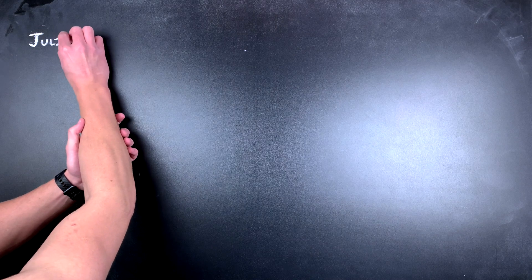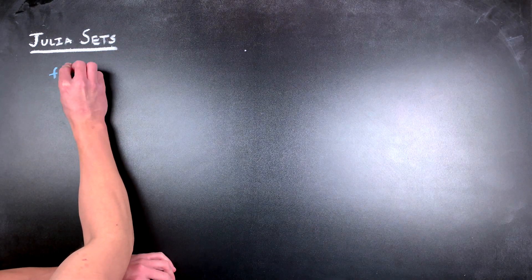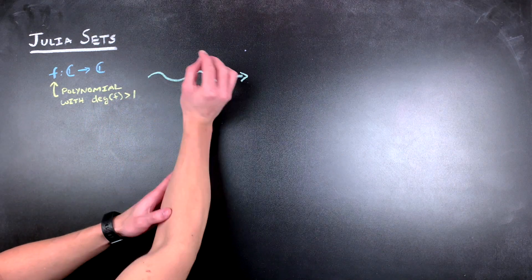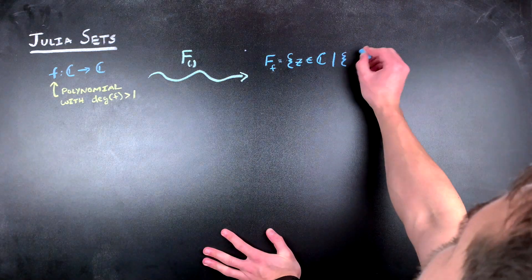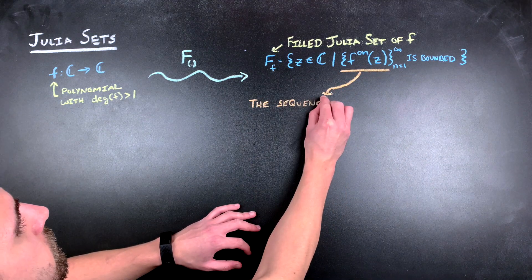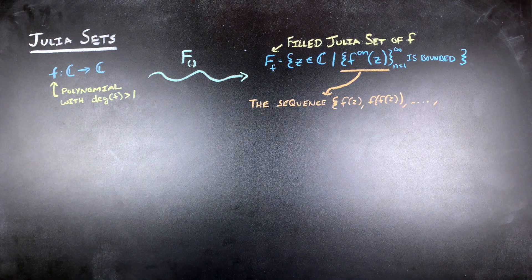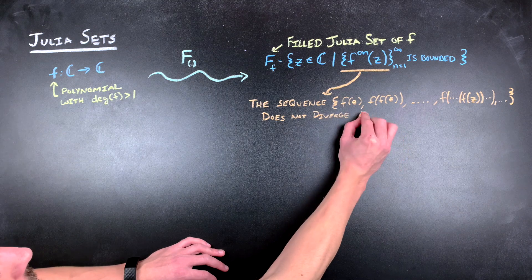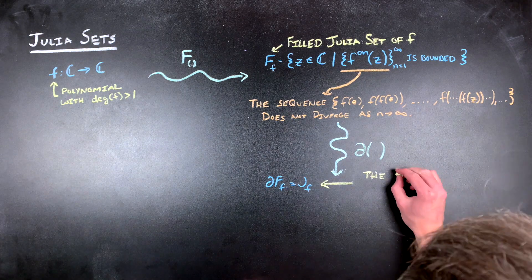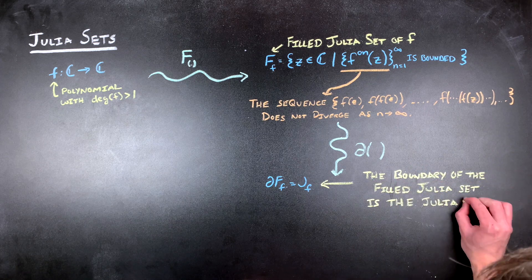So in order to do that, we're going to have to talk about what a Julia set is. A Julia set is generated by repeatedly applying a polynomial function of the complex plane. Given a polynomial function with degree greater than one from the complex plane to the complex plane, the filled Julia set, big F sub our function, denotes the set of complex numbers such that as n approaches infinity, the composition of the function n times does not go off to infinity. And once we have found the filled Julia set, we can just use the boundary operator to look at the boundary of that filled Julia set to yield the Julia set of our function.